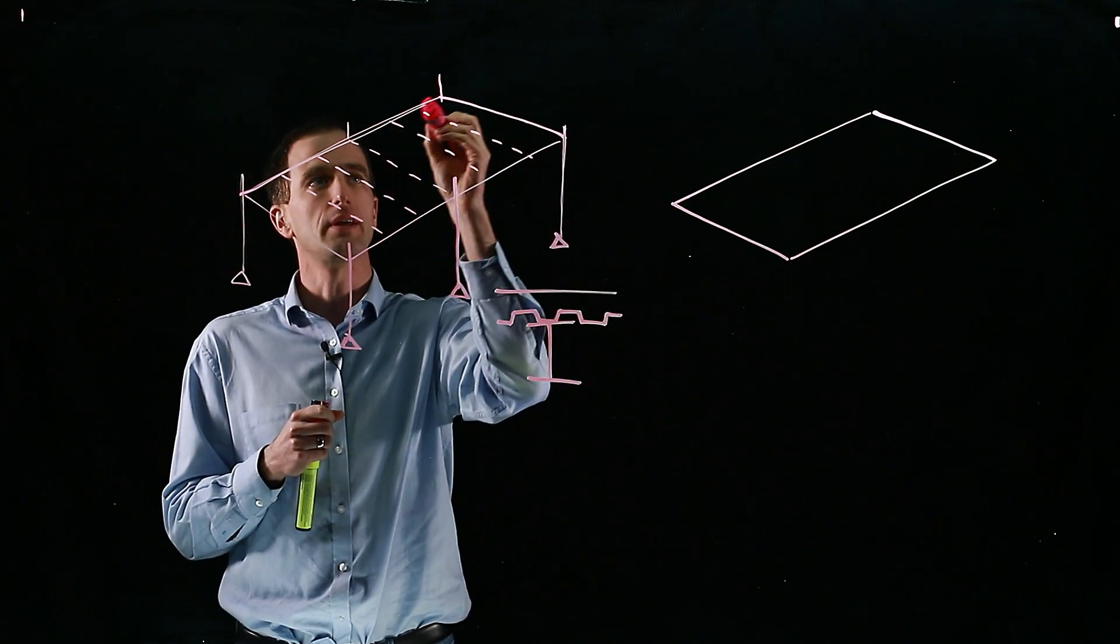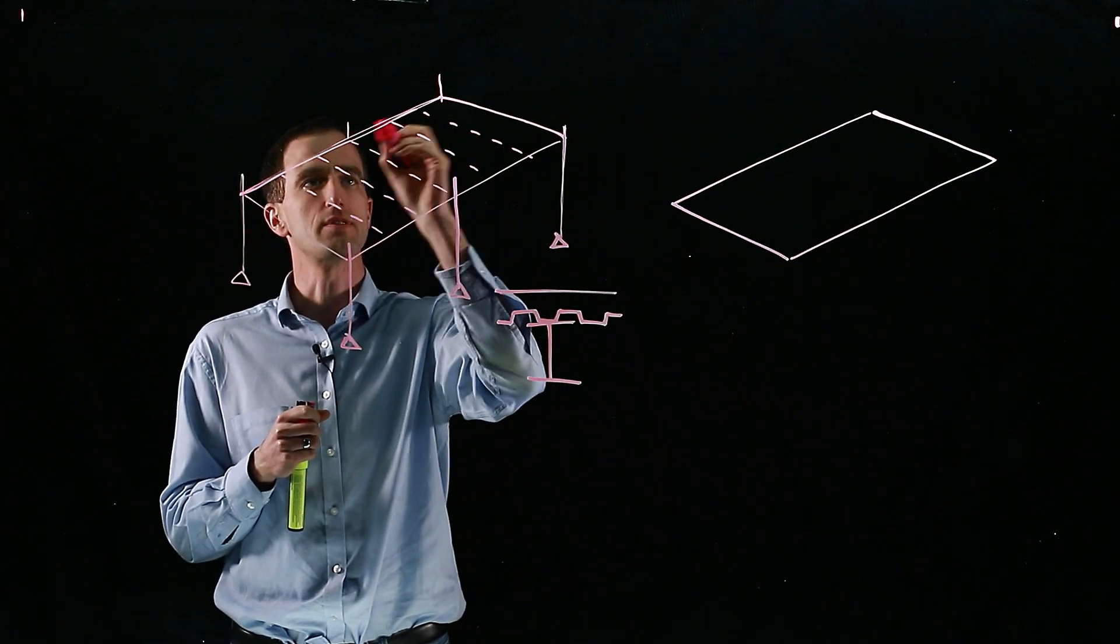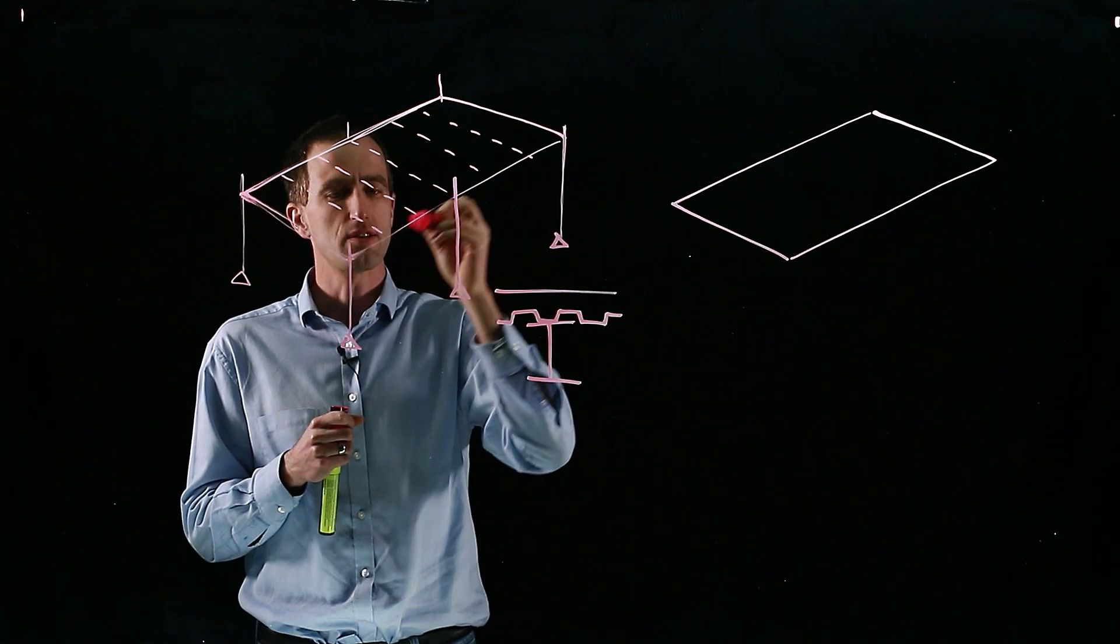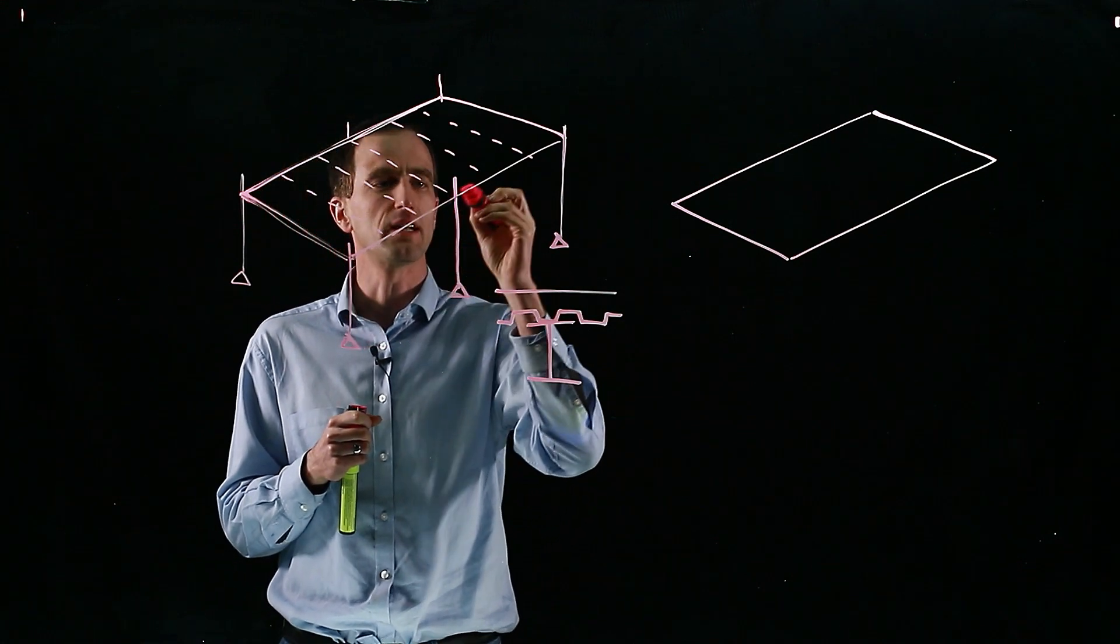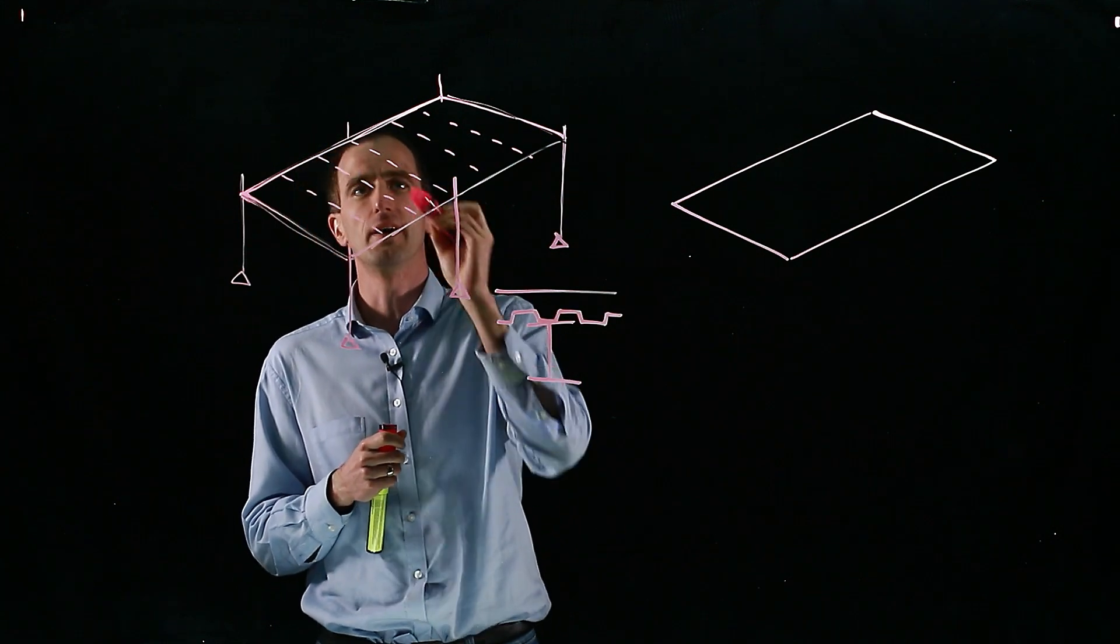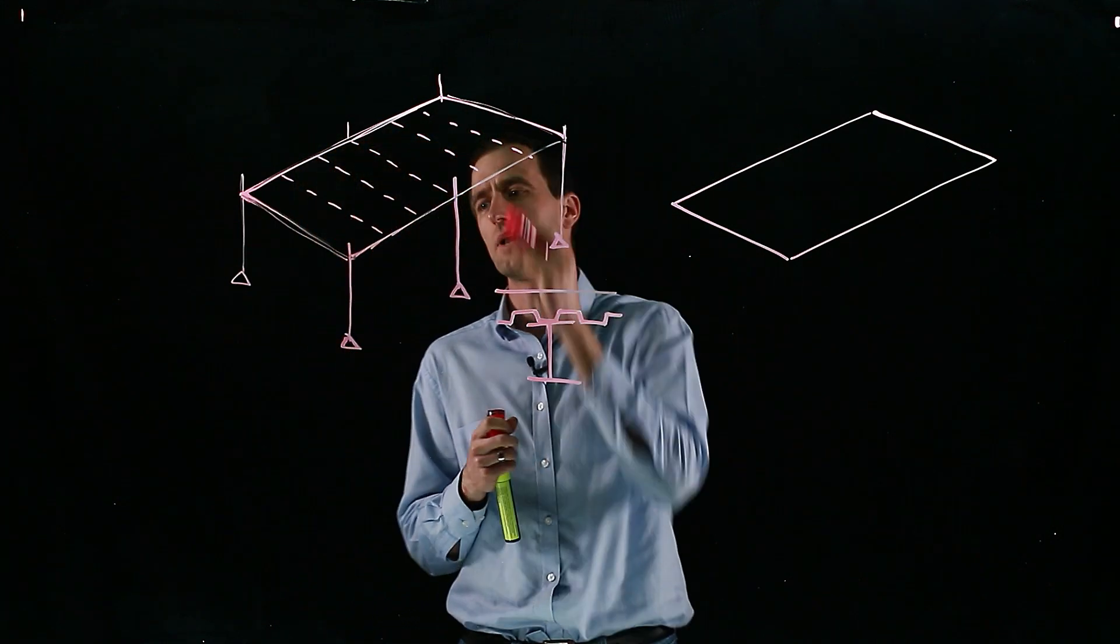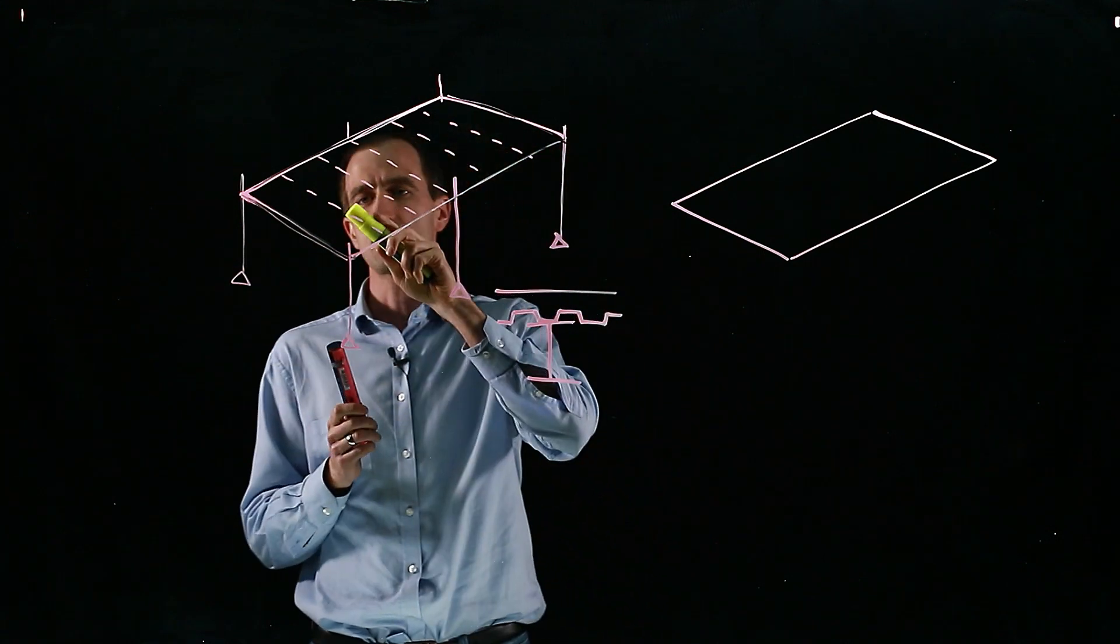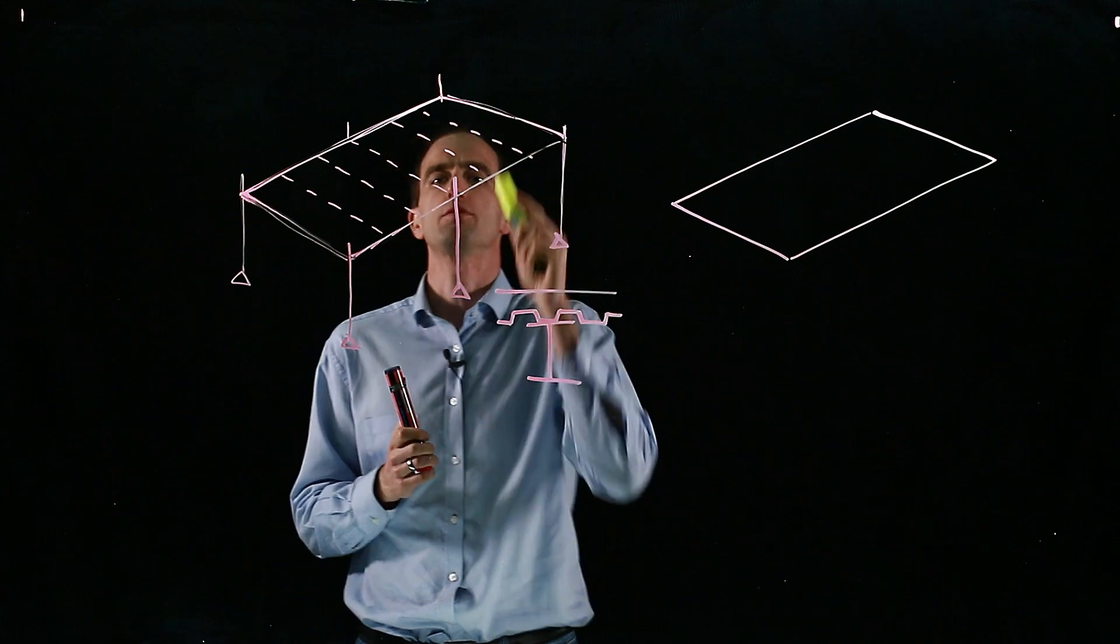If we can make sure that our primary beams all the way around have enough capacity to carry the floor at the fire limit state, we can use them to carry the secondary beams. I've got dashed lines showing the secondary beams on my building, and we can just ignore protecting the secondary beams altogether.